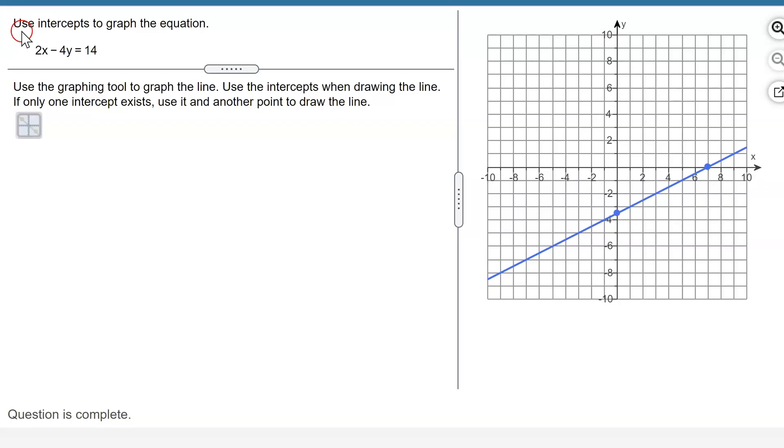One last thing. This problem told you to use the intercepts to graph the equation. If you plotted the correct line but didn't use the two intercepts, maybe use two other points or one intercept and another point, MyMathLab will tell you it's incorrect. It will say you've graphed the correct line but didn't use the intercepts. So please make sure you follow instructions.